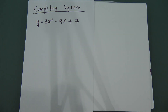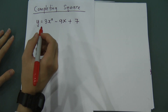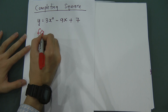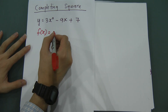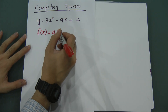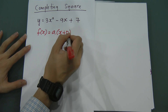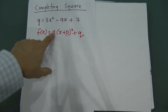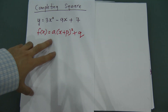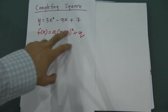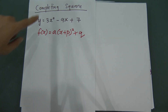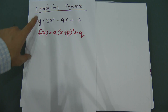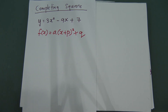Before I tell you that, you have to know the general form for completing square. The general form is f(x) = a(x + p)² + q, where a, p, and q are constants — meaning they are numbers.